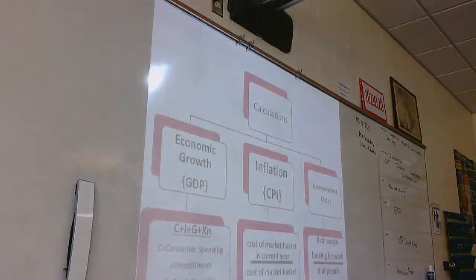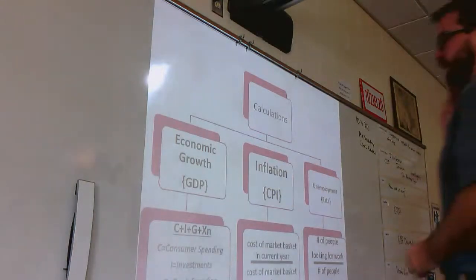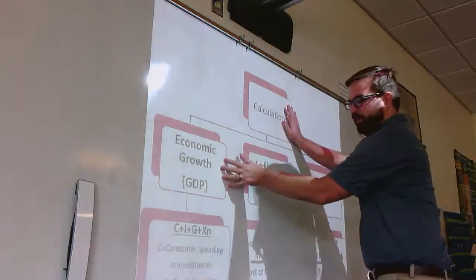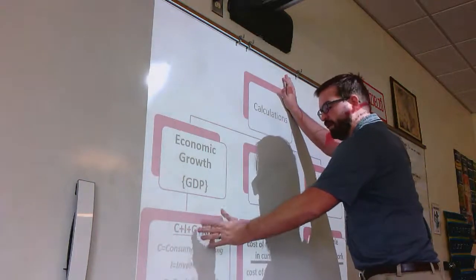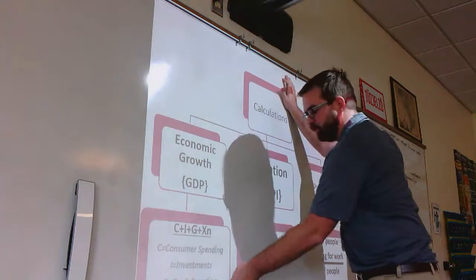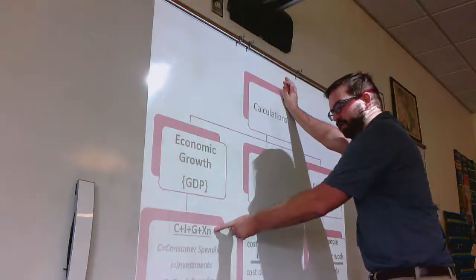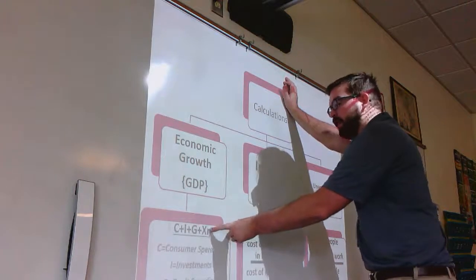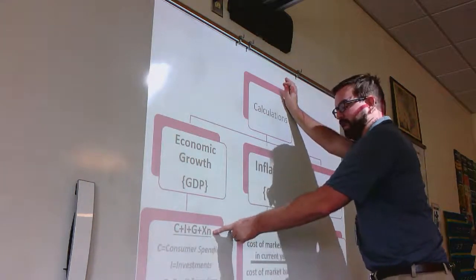Go ahead and copy down this chart. There are three big economic indicators we're going to look at in this class. The first one we already looked at was our GDP equation — consumer spending, business investments, and government spending. If you see X in the equation, that just means net exports. Our net exports for the past several years have been negative — we've imported a lot more than we've exported — and that hurts our GDP every year.